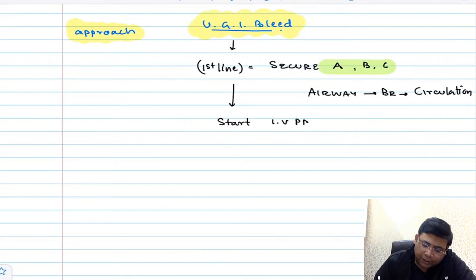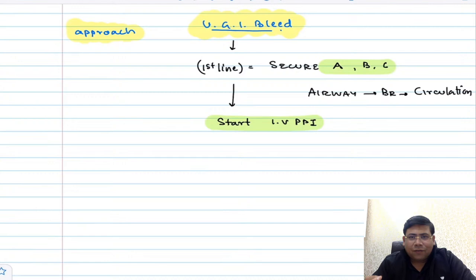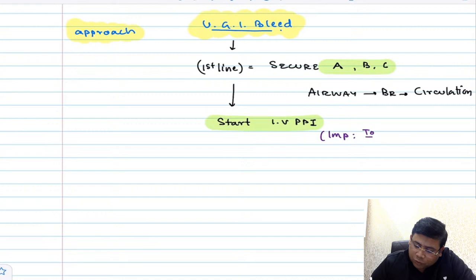Once you have done that, the next thing is to start IV PPIs — proton pump inhibitors. We start with PPIs because we presume that the most common cause of upper GI bleed is peptic ulcer disease. The importance of IV PPIs is that it is not going to stop the bleeding now, but it is to prevent an episode of re-bleed. The bleeding has to be tackled separately, but PPIs will prevent the episode of re-bleed.